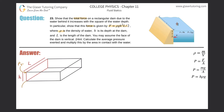This one down here will be P sub b for bottom. To find the average pressure, the average pressure will be equal to the pressure at the top plus the pressure at the bottom, all divided by two.